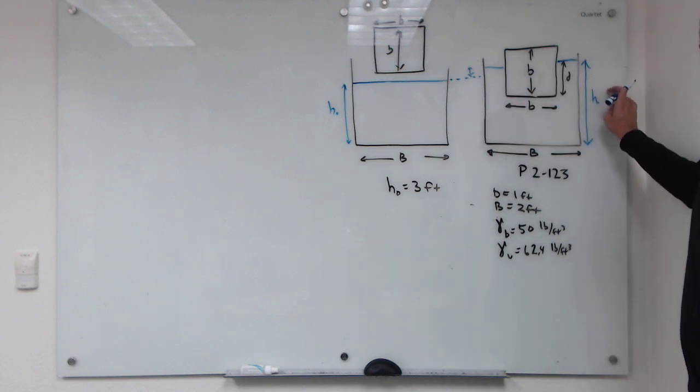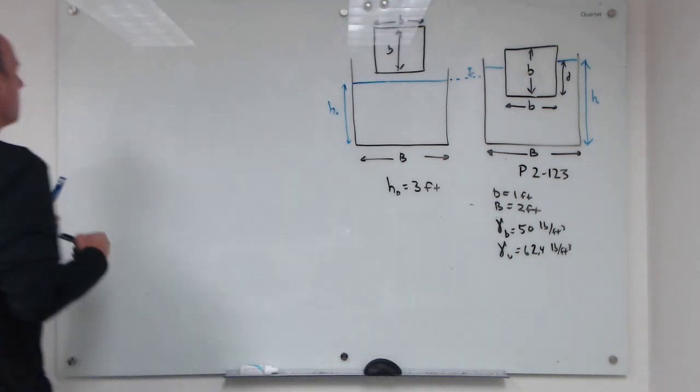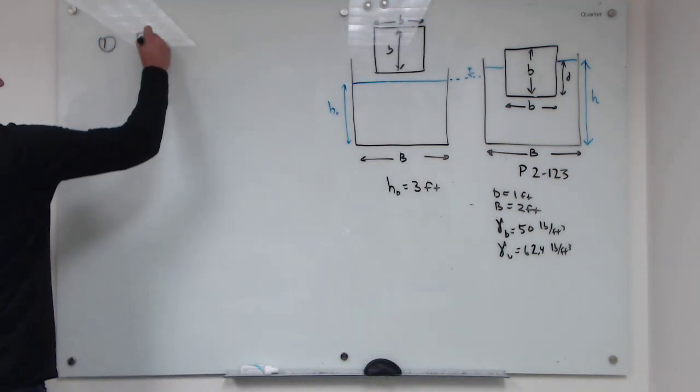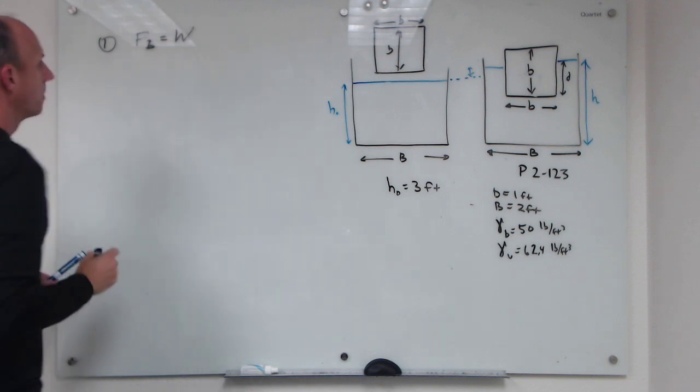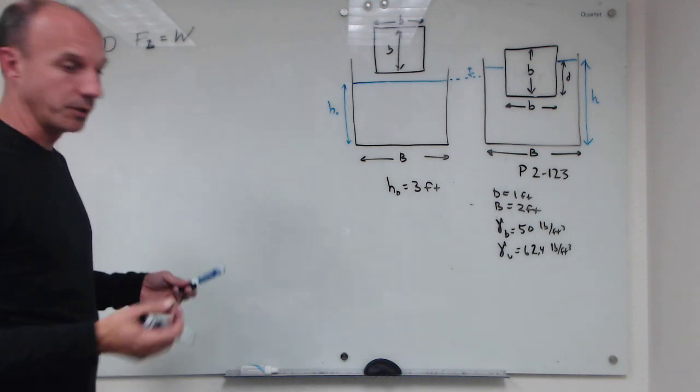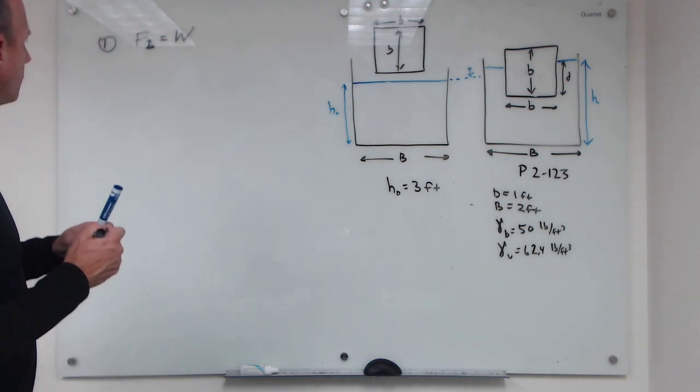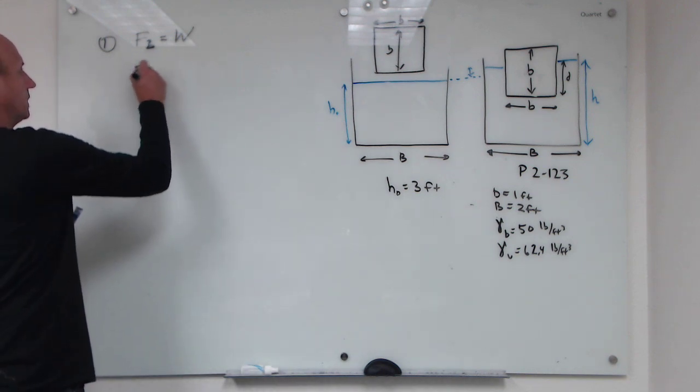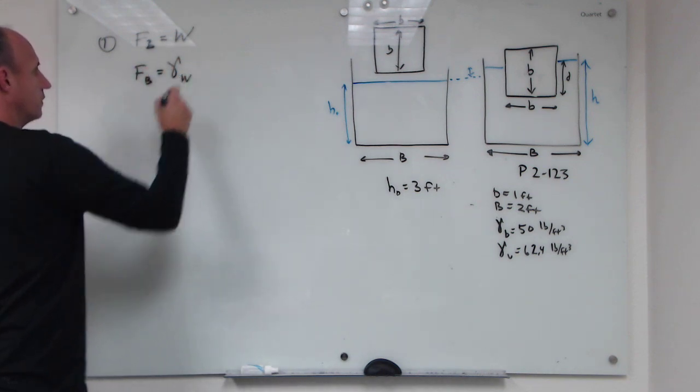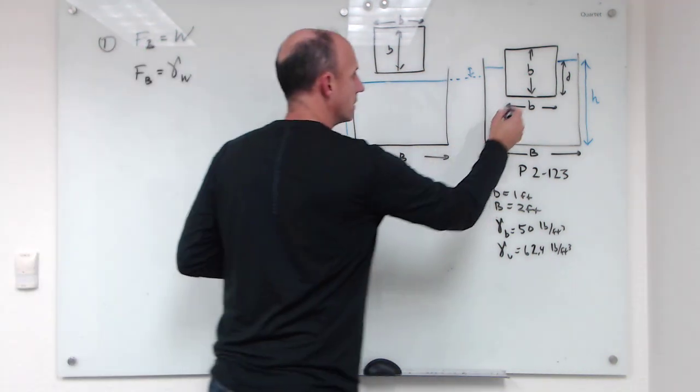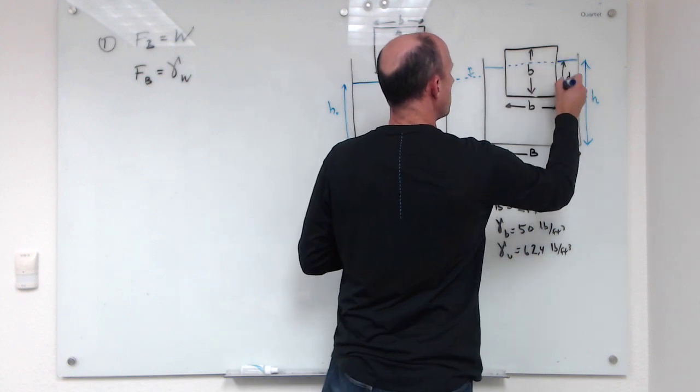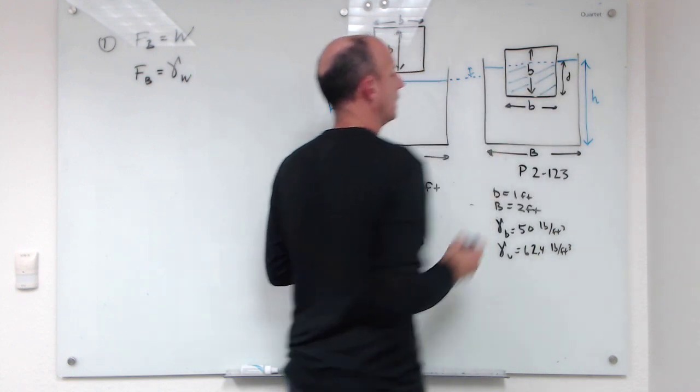Step one is to use Archimedes principle, which says that the buoyant force on an object equals the weight of the object if it's floating. So in this case it's floating, so the buoyant force on the object will be equal to the weight of displaced fluid. That's the unit weight of water times the volume displaced, which is going to be equal to this volume here.